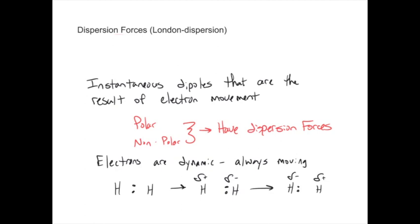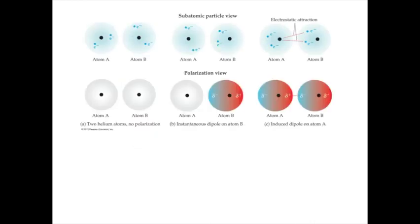If you get two molecules that are exhibiting these instantaneous dipoles at the same time and close enough to each other, they may begin to attract. And if the temperature is low enough, they may turn from a gas — in hydrogen's case — to a liquid, or even colder, might turn from a liquid into a solid. Simple atoms could also exhibit instantaneous dipoles. If it's got electrons and the electrons move, then it has an instantaneous dipole, and as a result, could exhibit some dispersion forces.